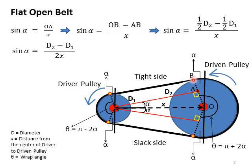We draw a line from the final end of wrapping to the center. Whatever angle is made between these two lines is referred to as wrap angle theta. So the wrap angle theta, as the name suggests, is the angle through which the belt is wrapping around the pulleys.